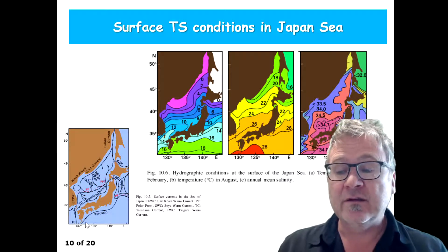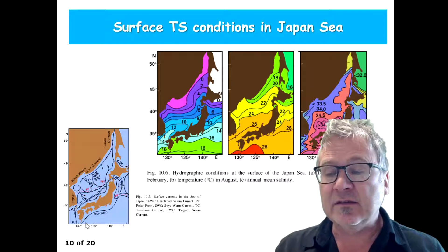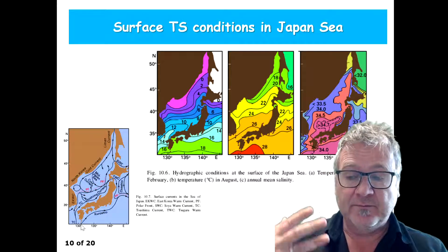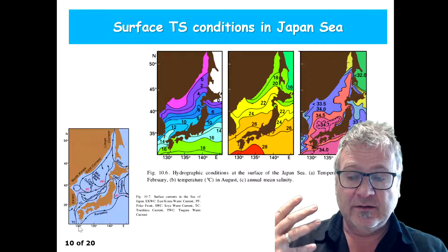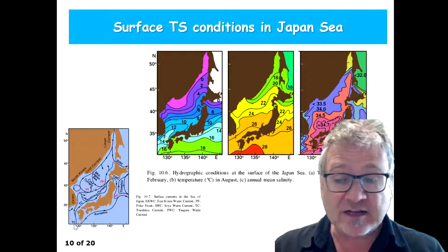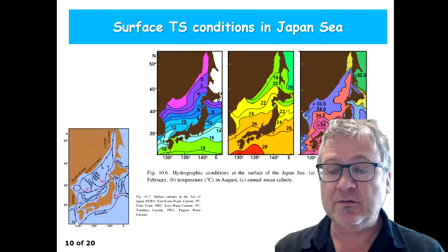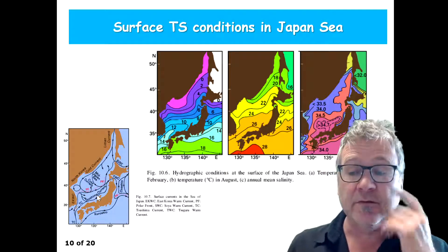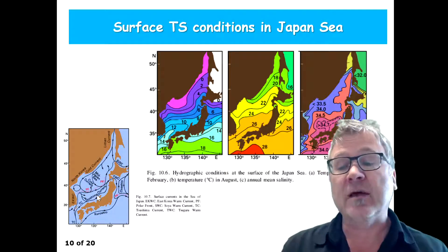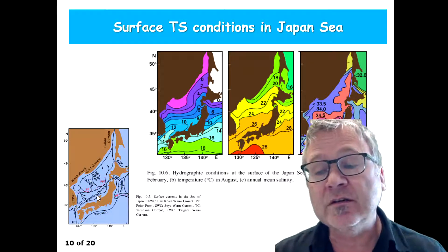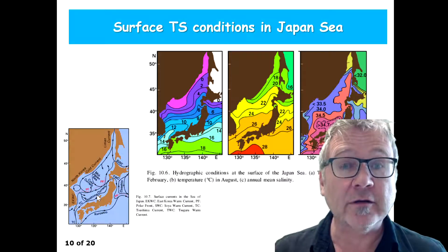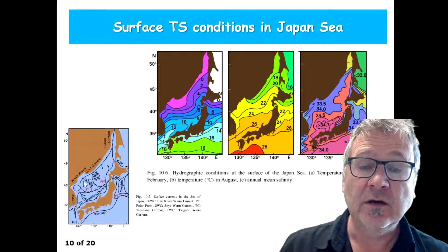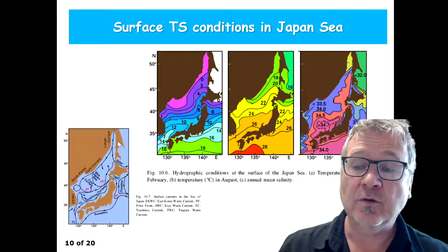However, from the south there is the Tsushima current coming, which is a branch of the Kuroshio current. It moves warm water into the region from the south, and from the north comes cold, low-salinity water.